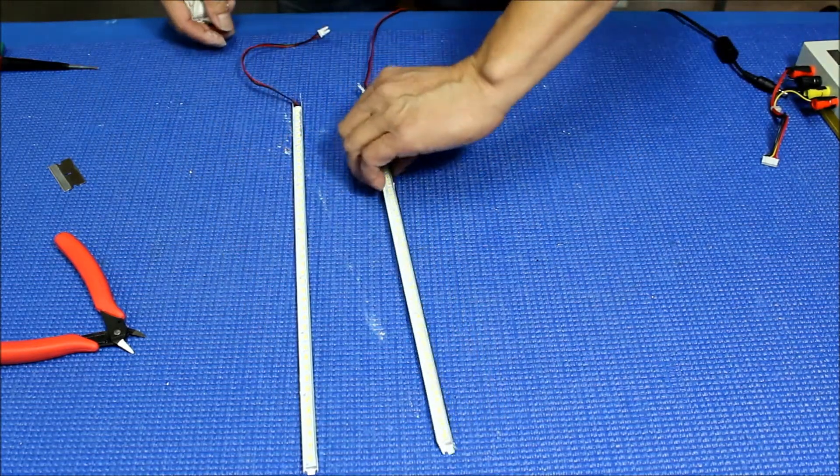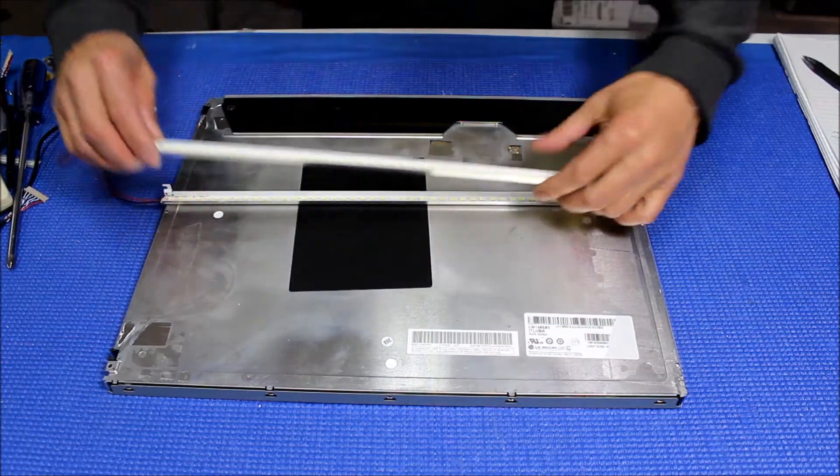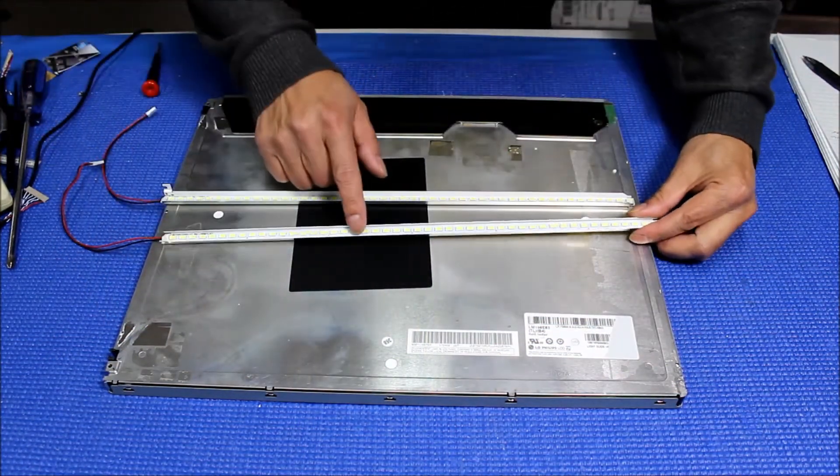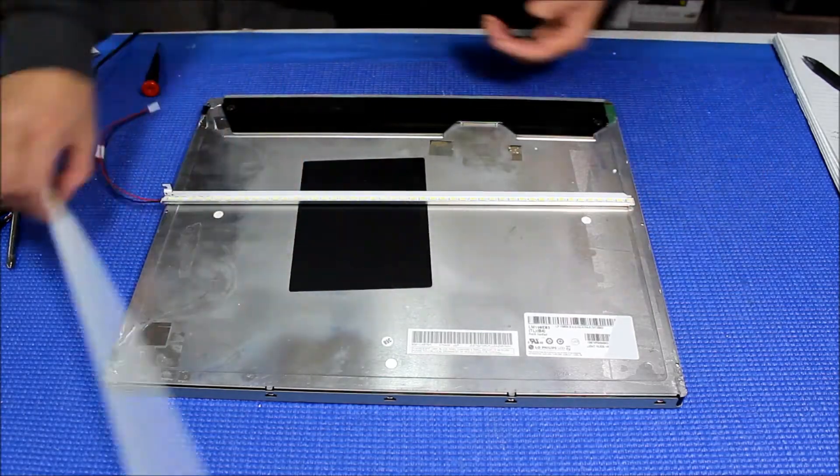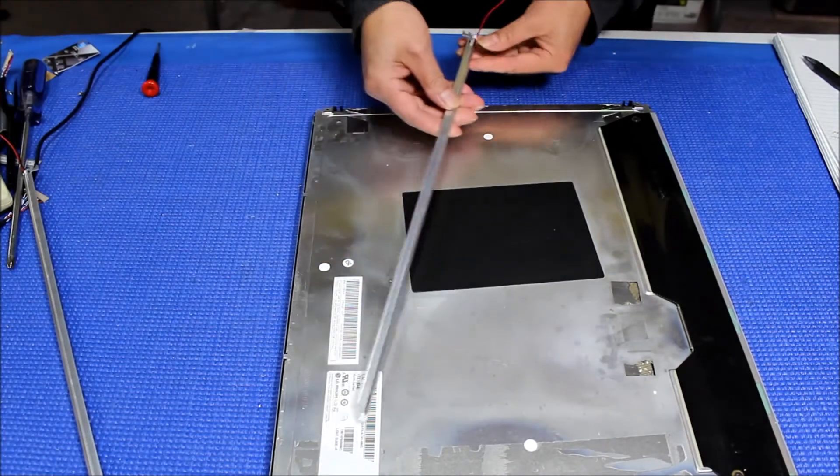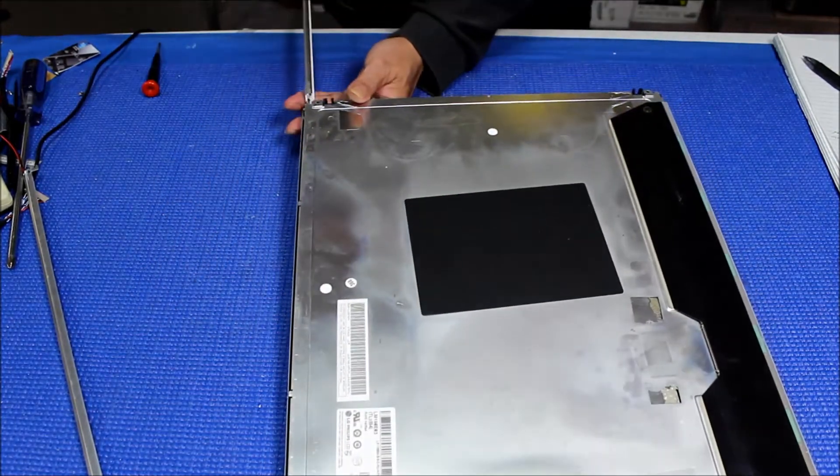Now we're going to let it dry and then we can push it back to the LCD. Now the silicone is dry, so we are ready to put it back. It's quite easy. Just carefully push it in.